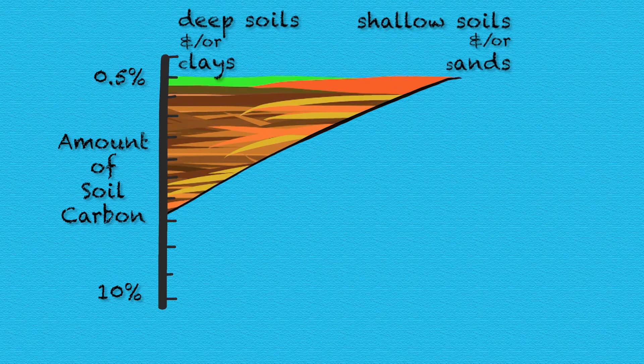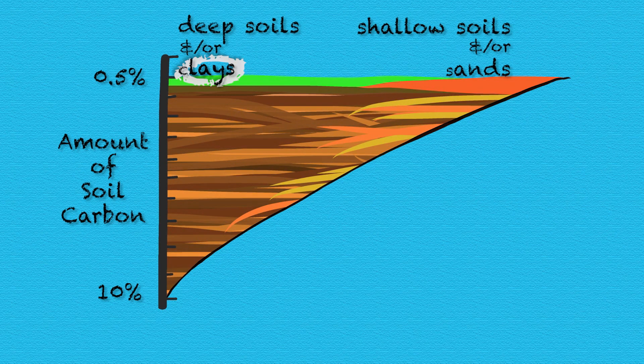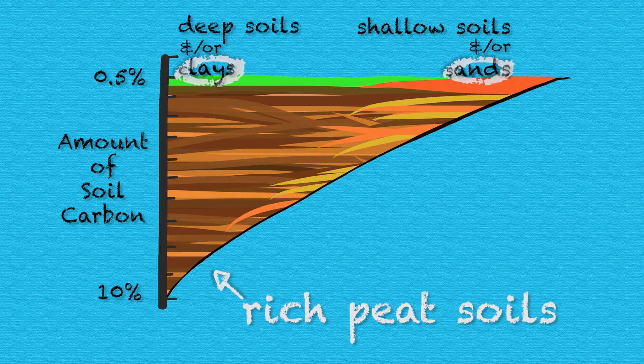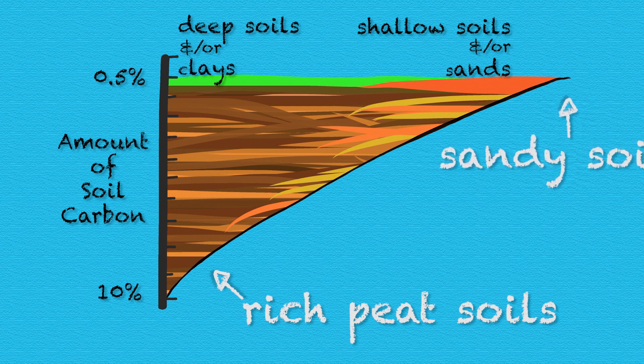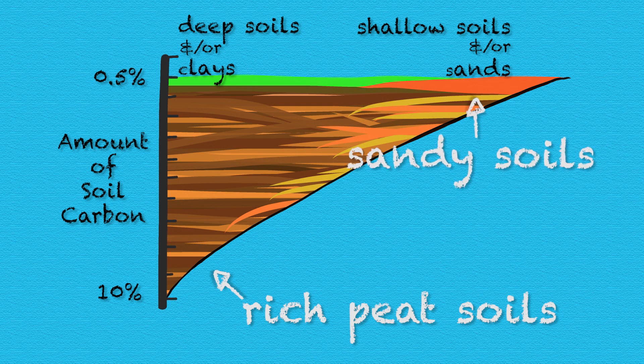Soil type and depth is also important, where clay-based soils hold more soil carbon than sands. Soil carbon levels can vary from rich peat soils with greater than 10% soil carbon, right down to highly cultivated and sandy soils which can have as little as half a percent. Although land management tends to be the minor player, it can influence carbon content over time.